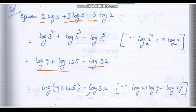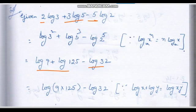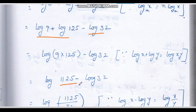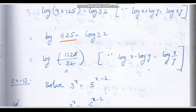9 into 125 equals 1125, so we get log 1125 minus log 32. Using the formula: log x minus log y equals log (x/y), the answer is log (1125/32).